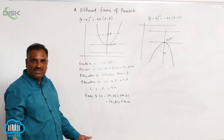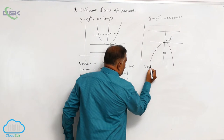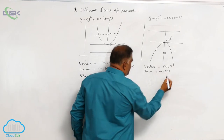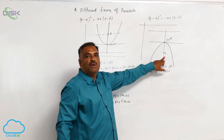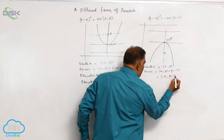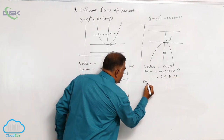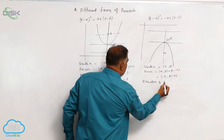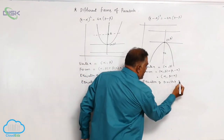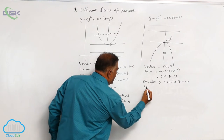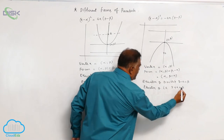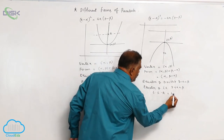We list out all the properties one by one. Vertex is equal to alpha comma beta. Focus is equal to alpha comma beta minus a, since the previous standard focus is 0 comma minus a. The equation of directrix becomes y minus a equal to beta. The equation of latus rectum is given by y plus a equal to beta. Length of latus rectum is equal to 4a units.